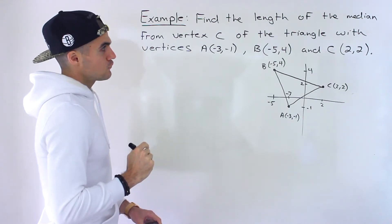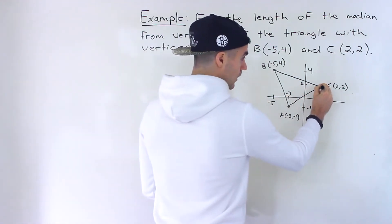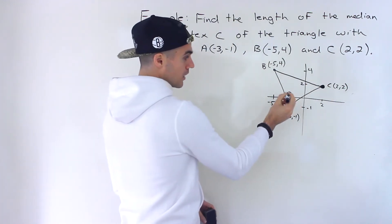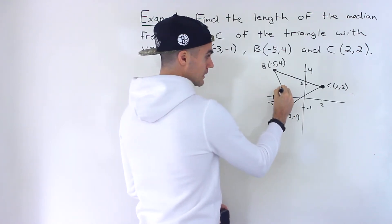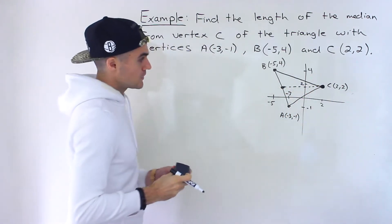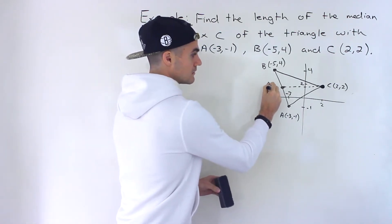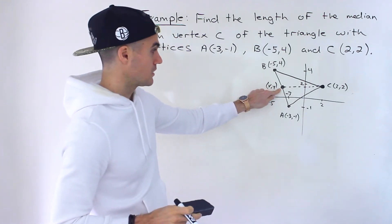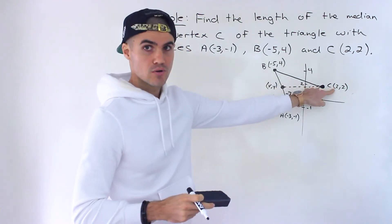What they're asking for is the length of the median from vertex C. Now what is a median? Well, from the vertex that they're asking for to the midpoint of the opposite side. So we'd have to find the midpoint between A and B, which would be like over here. That's the median right there, and we have to find the length of this median.